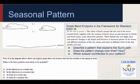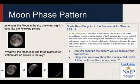Describe a pattern that explains the sun's path. Does the path change over time? How? Which answer contributes to your pattern? Look for patterns in the sun's path through the sky both during the day and throughout the year. Teachers might include animations to help explain seasonal patterns and changes. Ask students to explain the pattern in their own words. If X occurs during spring, which answer would most likely complete the pattern? Earth's science standards encourage students to find patterns between the moon's path and the sun's path. This is a great opportunity to use animations and physical models in class.